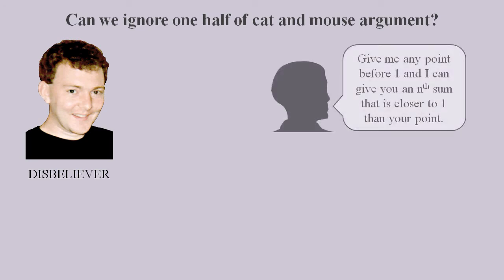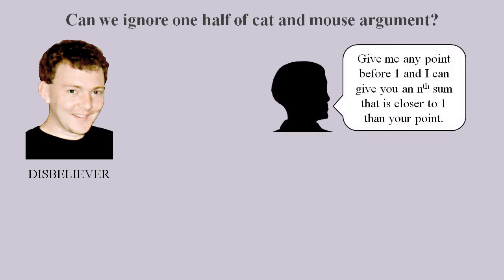In other words, they are saying that 0.9 recurring must equal 1 because if you give me any point before 1, then I can find an nth sum that's closer to 1 than your point.